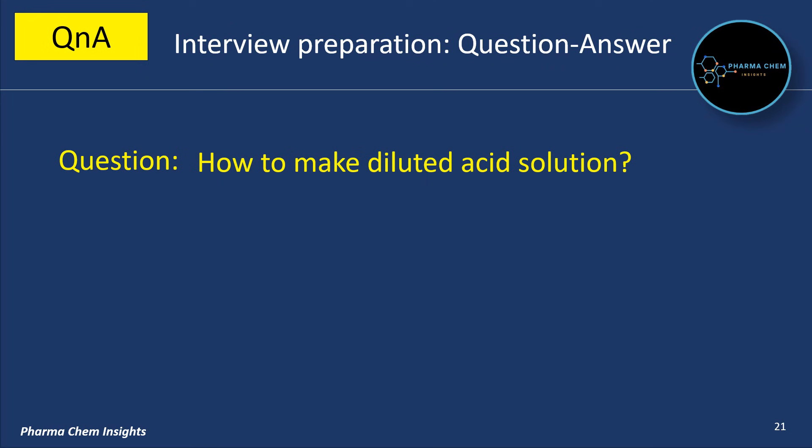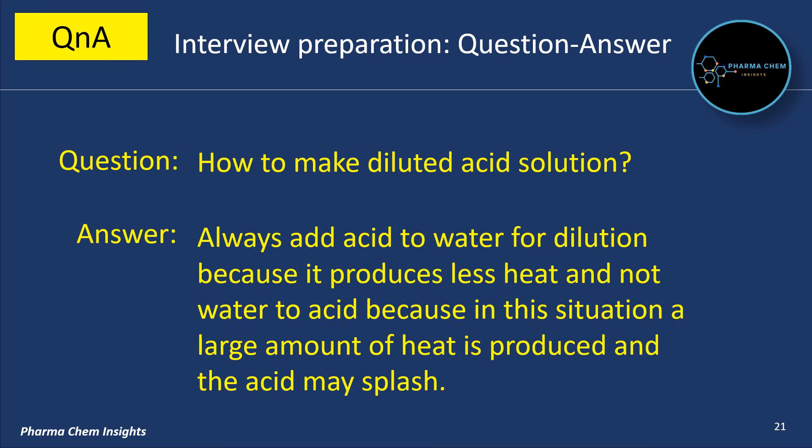How to make a diluted acid solution? For making a diluted acid solution, always add acid to water for dilution because it produces less heat. Do not add water to acid, because in that situation a large amount of heat is produced and the acid may splash.